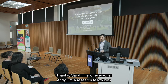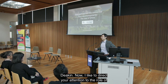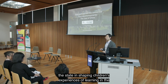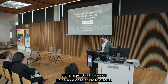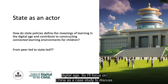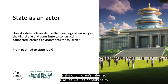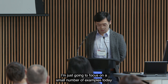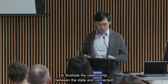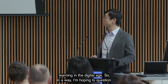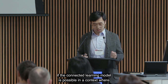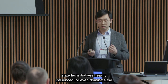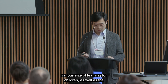Hello everyone, I'm Andy, a research fellow with Deakin. I'd like to direct your attention to the role of the state in shaping children's experiences of learning in the digital age. I'll focus on China as a case study to discuss how policy discourses define the meanings of learning and the risks of children's internet use, as well as contribute to constructing and configuring the connected learning environments for children. There have been many policy interventions focusing on children's learning and everyday life in China, and I'm hoping to question if the connected learning model is possible in a context where state-led initiatives heavily influence or even dominate the various sides of learning for children and the relationships between them.